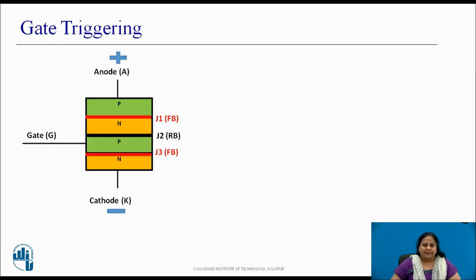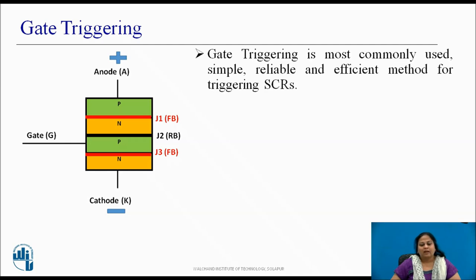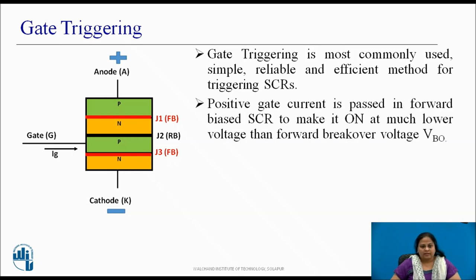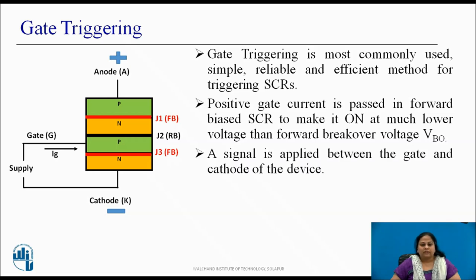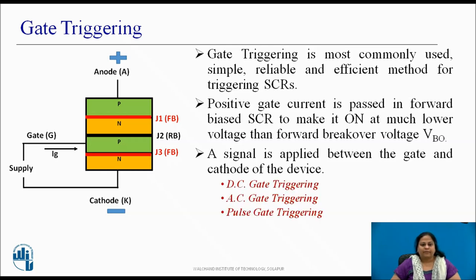Gate triggering is the most commonly used, simple, reliable, and efficient method for triggering the SCR. In this, positive gate current is passed in a forward biased SCR to turn it on at much lower forward voltage than VBO. For gate triggering, a signal is applied between the gate and cathode of the device. Depending on the signal used, gate triggering is classified into three types: DC, AC, and pulse gate triggering.